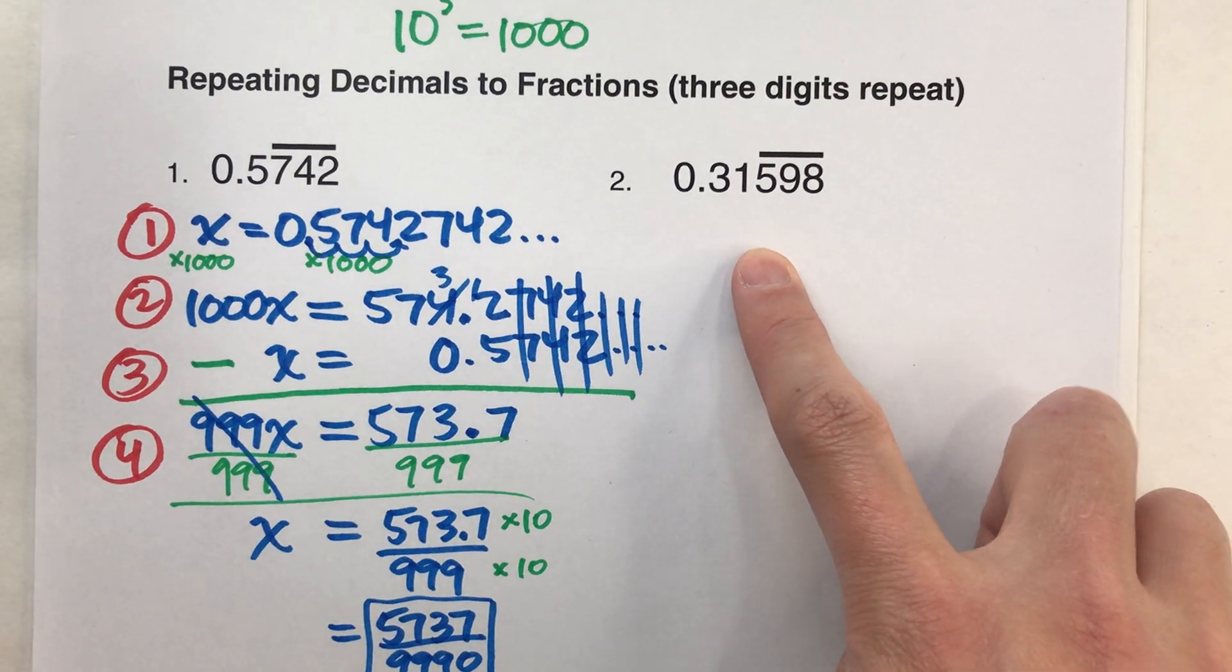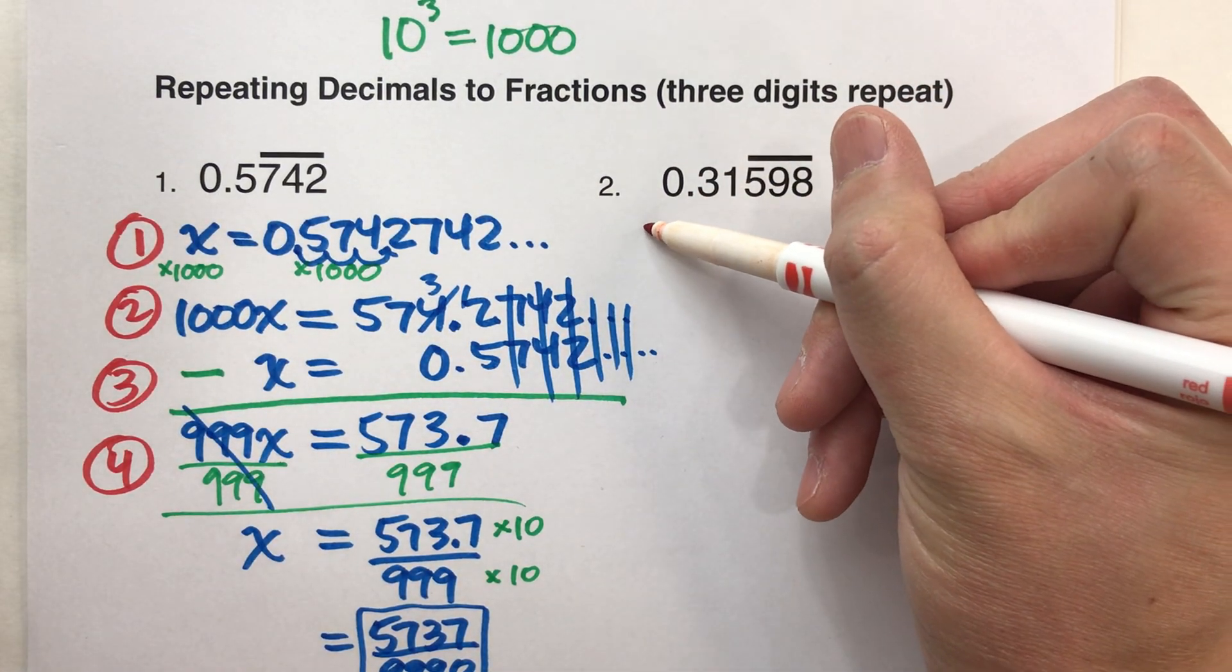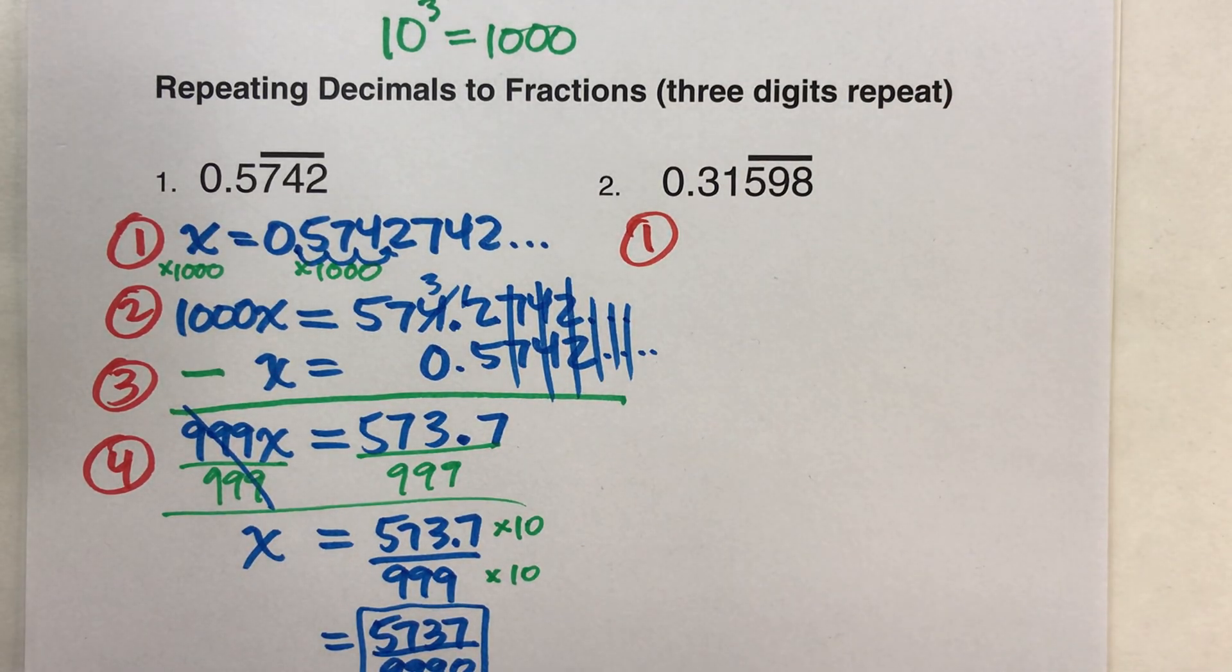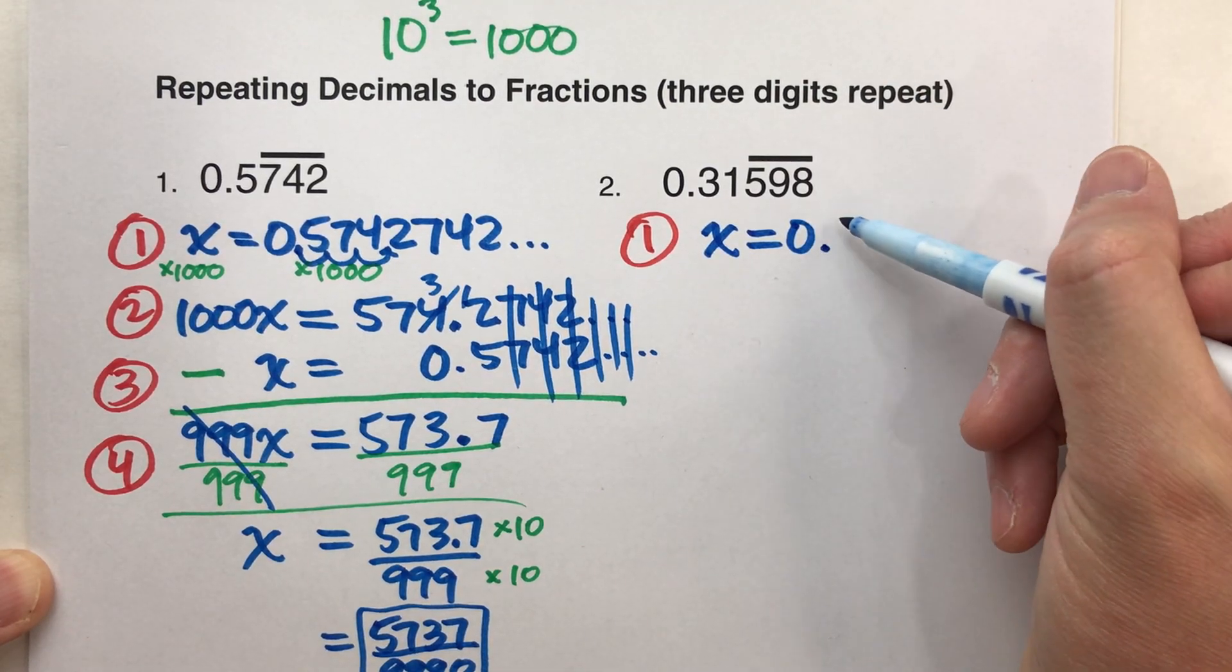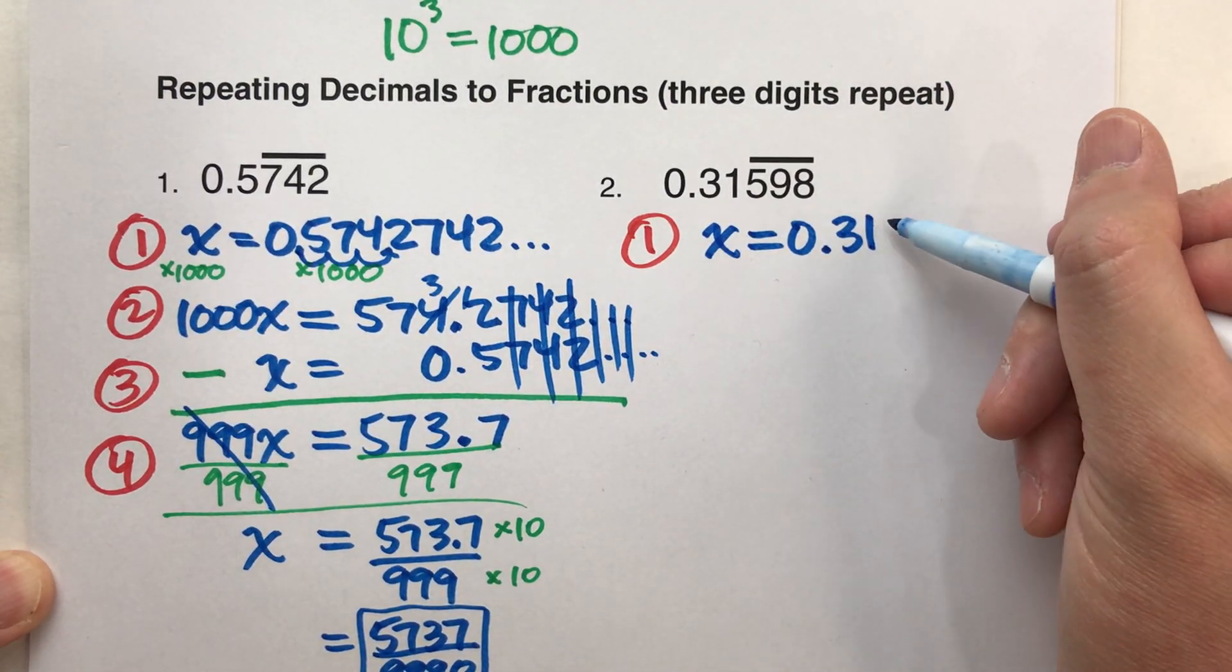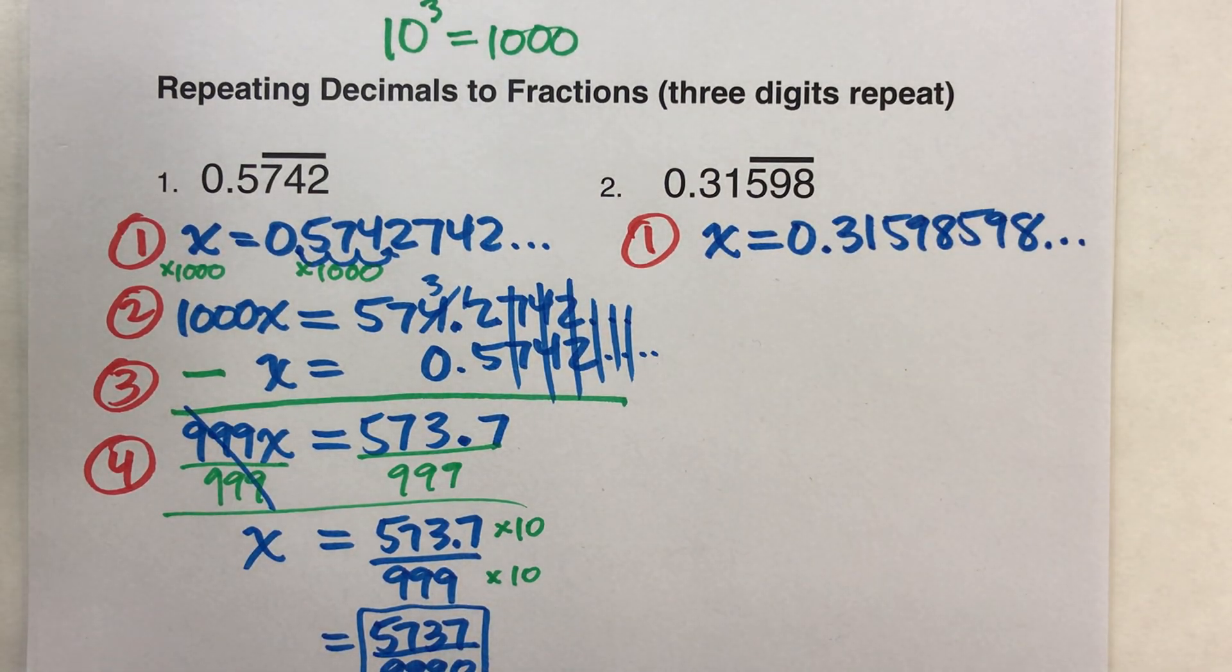Alright, here we go, 0.31598598598598. Step 1, write out our equation, x equals this number, 0.31598598598.